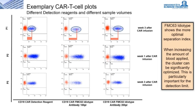The FMC63 idiotype shows the more optimal separation index — note the bar length shown in red. When increasing the amount of blood applied, the cluster can be significantly optimized, as symbolized by blue circles. This is particularly important for the detection limit. At lower cell counts, we suggest working with 200 microliters of whole blood due to the higher number of events recorded by the flow cytometer.